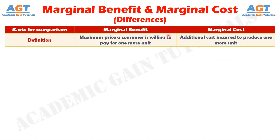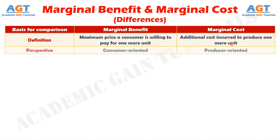Marginal benefit is defined as the highest price a consumer is willing to pay for one more unit of a product, whereas marginal cost refers to the additional expense a business incurs to produce one more unit. Number two: marginal benefit is viewed from the consumer's perspective, whereas marginal cost is analyzed from the producer's viewpoint.